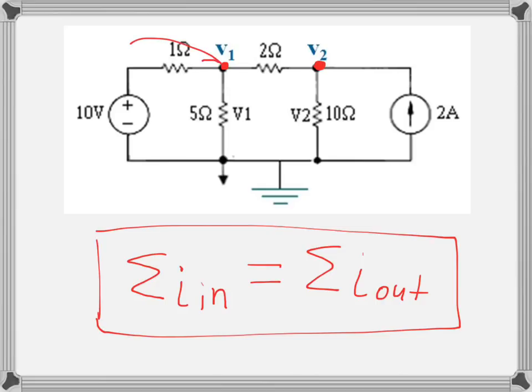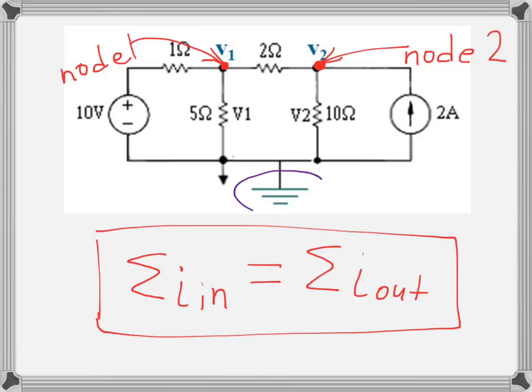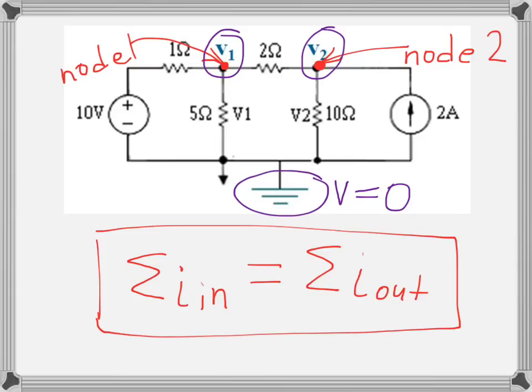On our diagram we can easily see two nodes. Let's name them: the first will be node 1 and the second node will be node 2. Next, let's assign the main voltages we'll be working with. The first is the reference node, usually placed at the bottom of the circuit, where the voltage will be 0. We'll also be using node voltages V1 and V2. Applying Kirchhoff's current law to each node, we'll produce two equations to find V1 and V2.